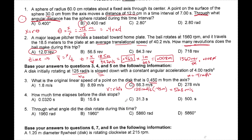How much time elapses before the disk stops? It comes to a stop, so omega final equals zero. Using omega final equals omega initial plus alpha t: 0 equals 125 minus 4t. So minus 125 divided by minus 4 gives t equals 31.3 seconds.